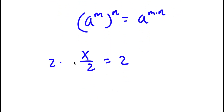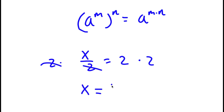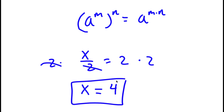So I'm left with x over 2 is equal to 2. To solve this, I'm going to multiply both sides by 2 — these cancel out — and on the left-hand side I have x is equal to 2 times 2, which is 4. So x equals 4 is my answer.